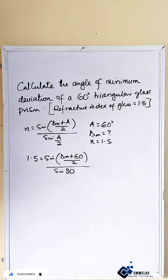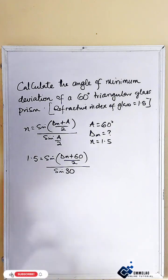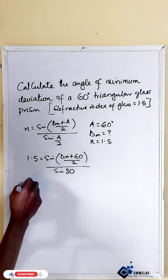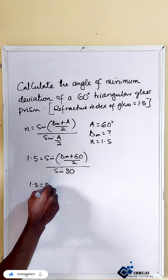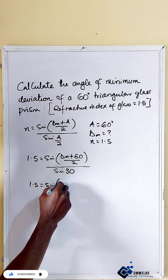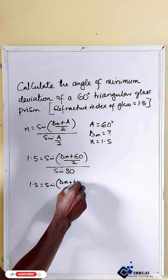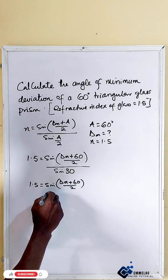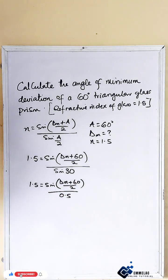Now let us recall that sine 30 gives us 0.5. So we have: 1.5 equals sine of (dm plus 60) all over 2, divided by 0.5.